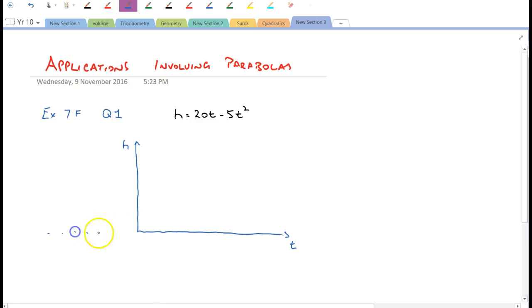And of course, we're not going to have any negative t, are we? Because there's no negative time. And we're not going to have any need for negative h because there's no negative h. This is the ground level, this is the ground. So we only need positive h and we only need positive t.